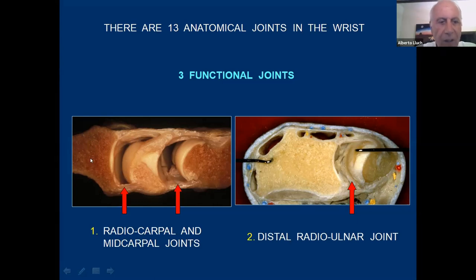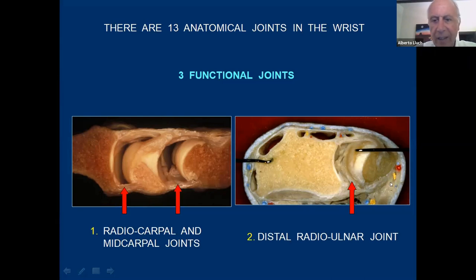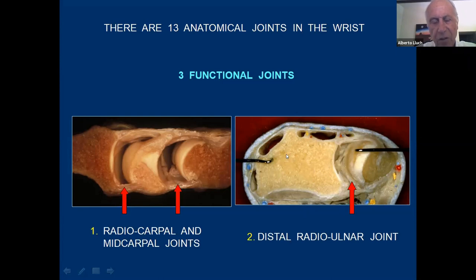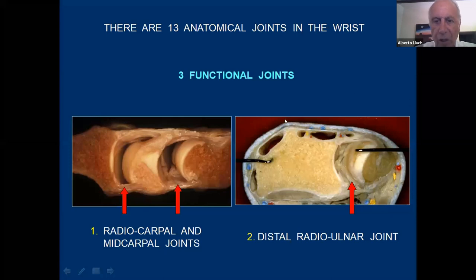There are the radiocarpal joints, the midcarpal joint between the lunate, scaphoid, capitate, etc., and then the distal radial joint. The distal radial joint is really not part of the wrist in the sense that it doesn't play any function in wrist extension, flexion, radial inclination, or ulnar inclination. It only provides rotation of the hand — rotation of the forearm into supination or pronation.